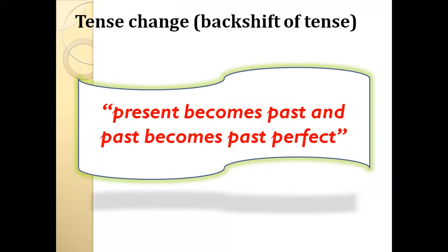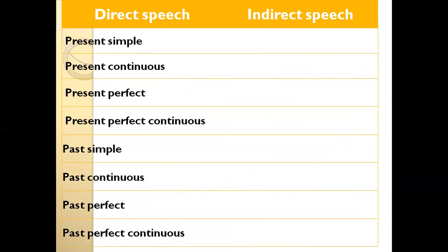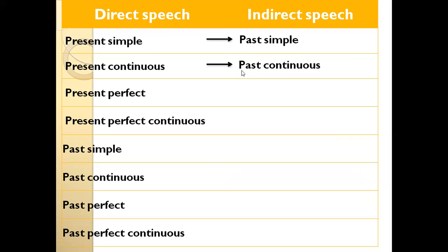When we backshift tense, present becomes past and past becomes past perfect. Let's review the chart to see more. When we change direct speech to reported speech, if the direct speech is in the present simple, it changes to past simple. If the tense is in present continuous, it changes to past continuous. And present perfect will become past perfect.